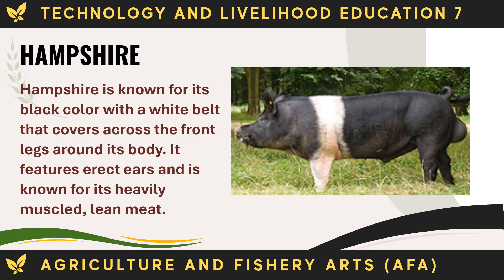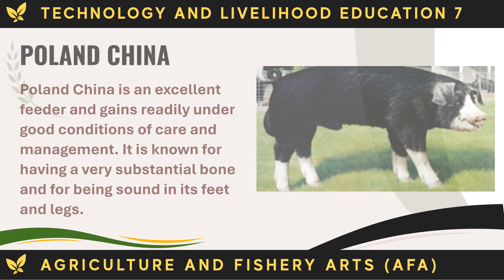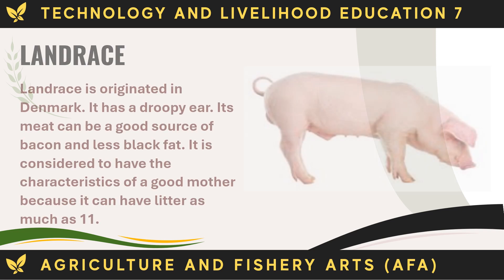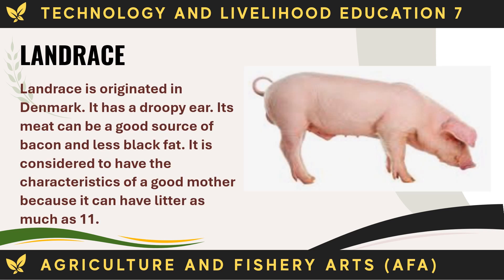The Hampshire is known for its black color with a white belt that covers across the front legs around its body. It features erect ears and is known for its heavily muscled, lean meat. Poland China is an excellent feeder and gains readily under good conditions of care and management, known for having a very substantial bone and being sound in its feet and legs. The Landrace originated in Denmark, has a droopy ear, and its meat can be a good source of bacon with less back fat. It is considered to have the characteristics of a good mother because it can have litters of as many as 11.